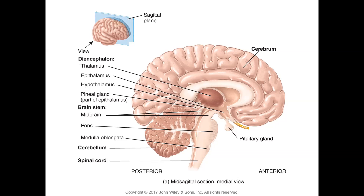The midbrain is a smaller area, superior to the pons and inferior to the diencephalon. It consists of the cerebral peduncles — white fibers that connect the upper and lower brain areas — and the corpora quadrigemini. 'Quadri' means four, 'gemini' means twin, so these are four twin bodies. The corpora quadrigemini are composed of two superior colliculi and two inferior colliculi.